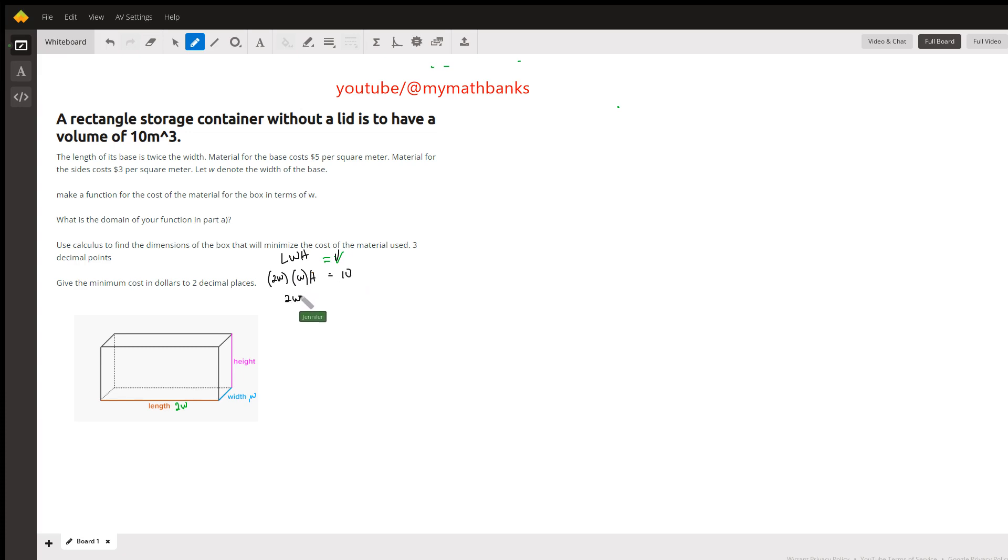So now simplifying this, you have 2w squared times h equals 10. Solving for h, so that we have an expression for height in terms of w, you divide 2w squared on both ends, so therefore your h is equal to 5 over w squared, the 10 and the 2 will cancel out. So this is 5 over w squared.